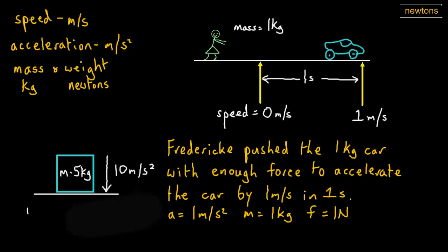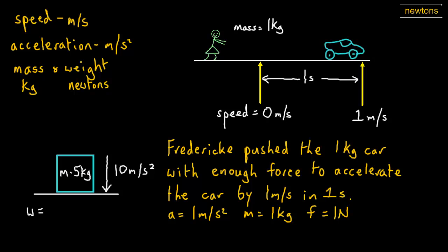As we did before, we know that weight equals mass multiplied by gravitational force, so that would equal five multiplied by ten, so the weight of this, we would say, is fifty newtons. And remember, a newton is the amount of force needed to accelerate one kilogram by one metre per second squared.